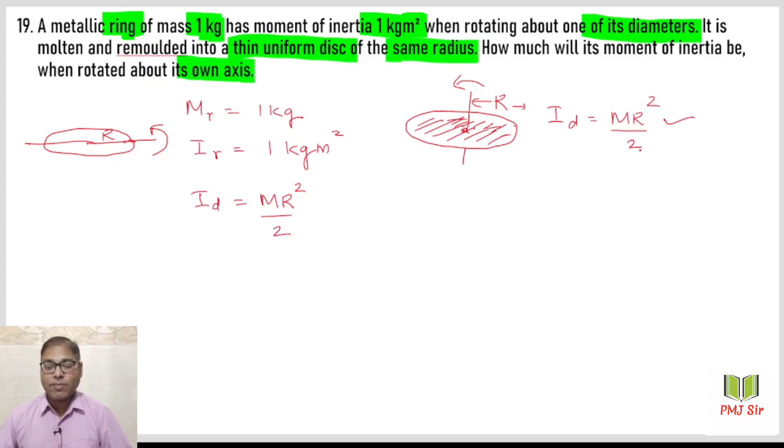For the disk rotating about its center perpendicular to the plane, moment of inertia is MR square upon 2. The radius is the same and mass is also the same, so obviously we will get the same number. The answer for the disk is also 1 kg meter square. In general, the ring had moment of inertia 1 about diameter, melted into a disk with same radius and mass, rotating about perpendicular axis gives the same value.